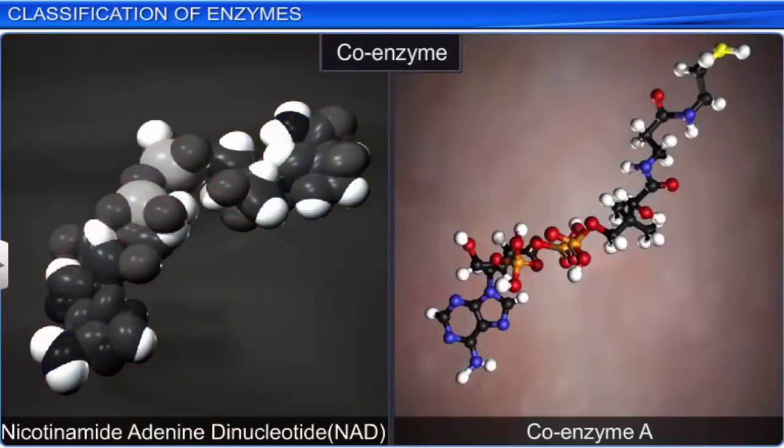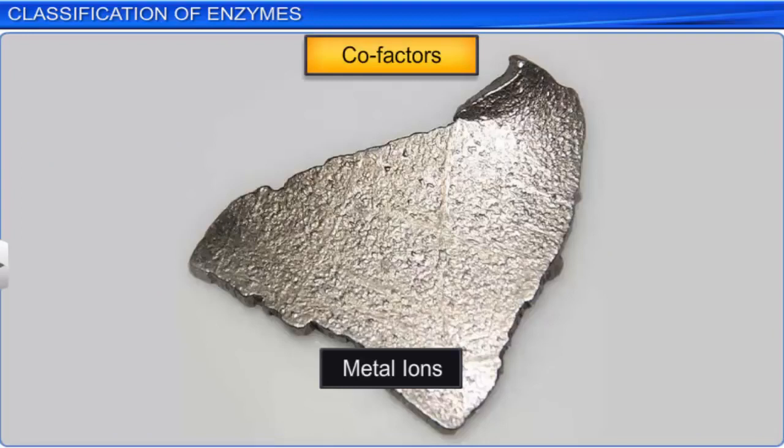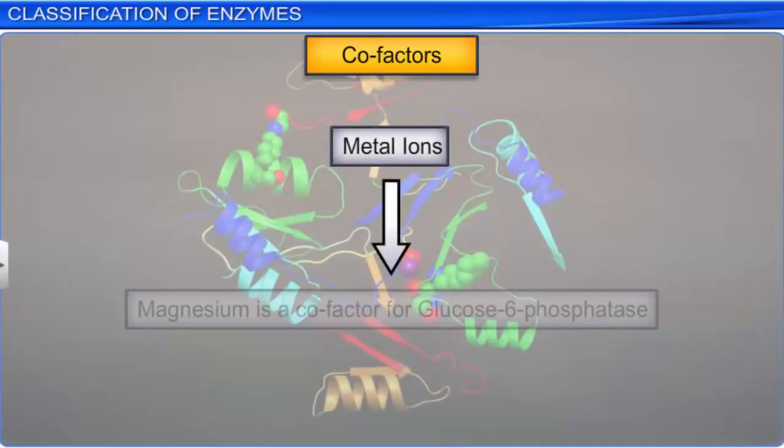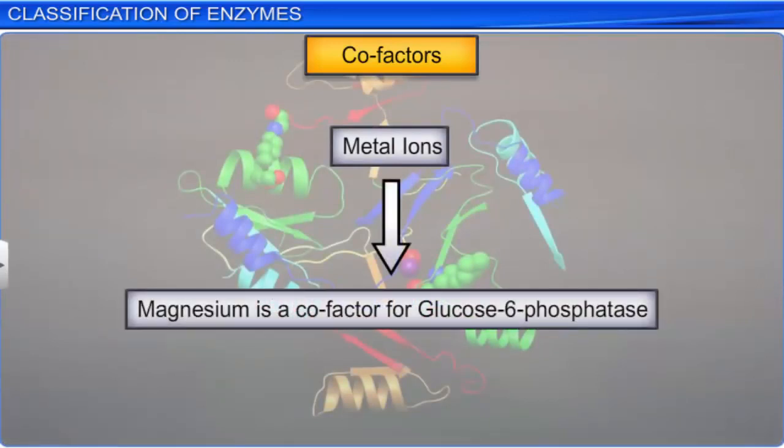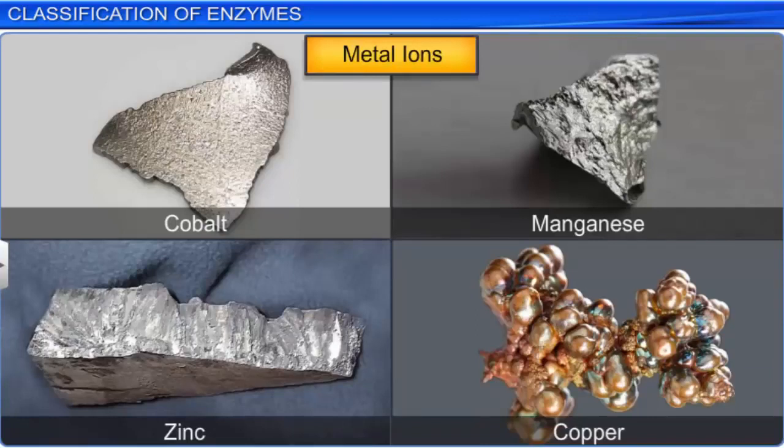The third type of cofactors is metal ions. They are required by enzymes to form coordination bonds with side chains at the active site and one or more coordination bond with the substrate. For example, magnesium is a cofactor for glucose 6-phosphatase and manganese is a cofactor for arginase. Some commonly occurring metal ions are cobalt, manganese, zinc, and copper.